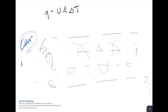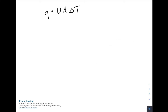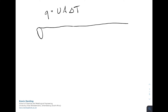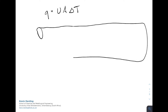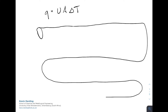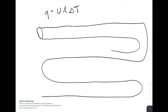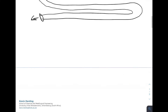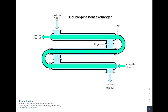Instead of just one straight pipe length, the pipe can double back and extend as far as needed, giving us a longer pipe. When we then put the jacket around that longer arrangement, it optimizes the heat transfer. In the neater diagram, the hot fluid enters at the tube side inlet on the bottom right, doubles back on itself through the pipe, and exits at the tube side outlet at the top.